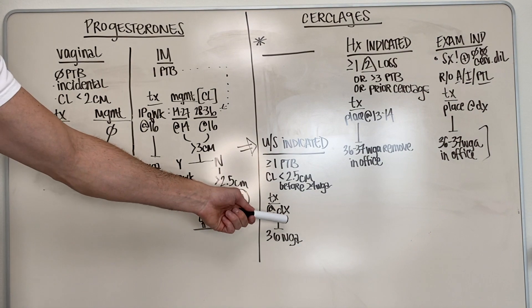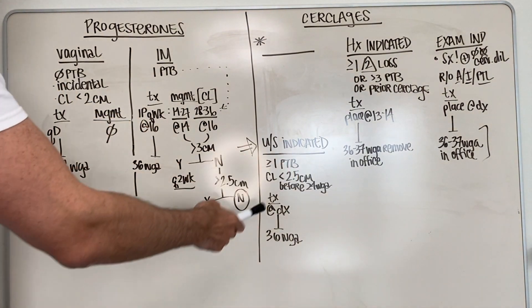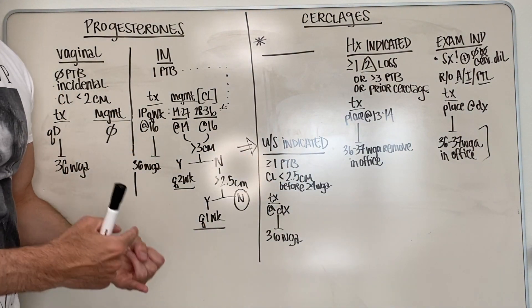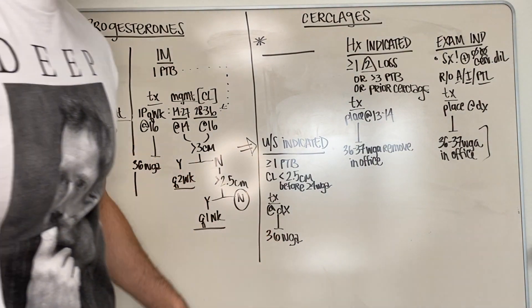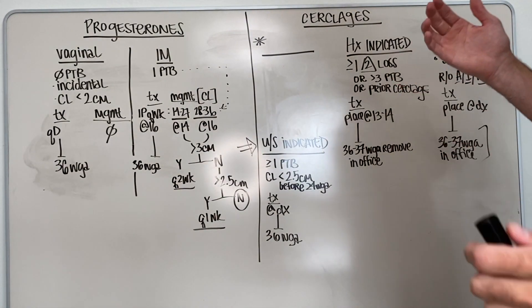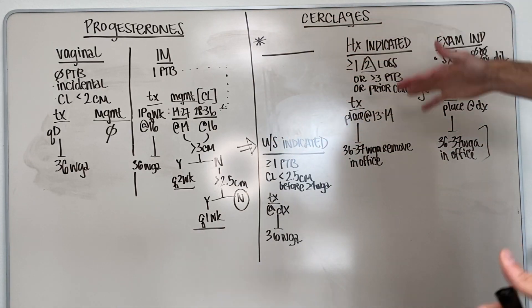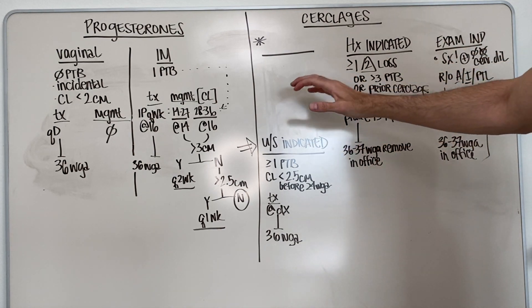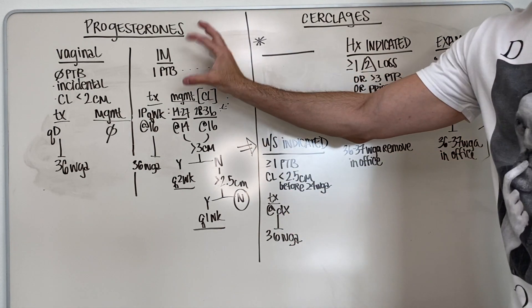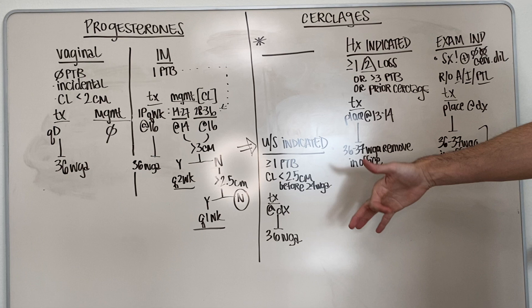This means that at time of diagnosis, before 24 weeks, a cerclage will be placed either McDonald or Shirodkar. And this usually gets taken out in the office at 36 weeks of gestation. So that's one of the three documented types. There's four total, but three documented types of cerclage placements. So that's ultrasound indicated kind of very similar and kind of feeds into this IM progesterone category.